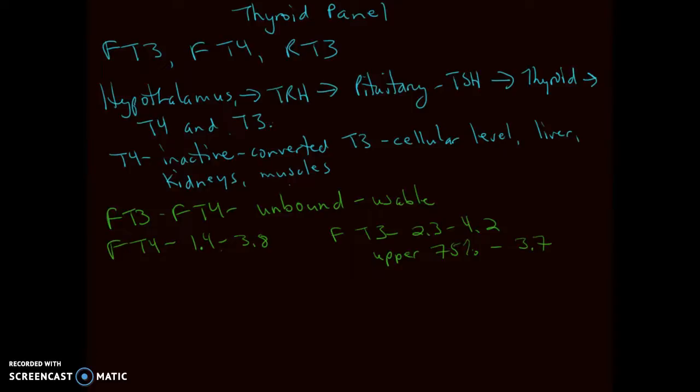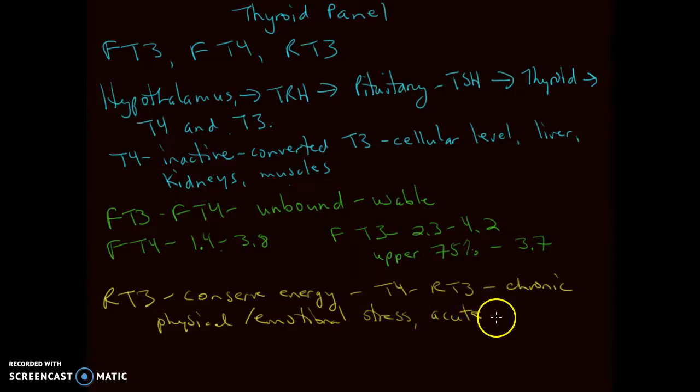So what is reverse T3? Well, sometimes the body wants to conserve energy. So instead of converting T4 to T3, it will convert T4 to reverse T3. Now this can occur in times of chronic physical and emotional stress. It can occur in times of acute injury or illness, chronic disease, and other factors can contribute to this as well.